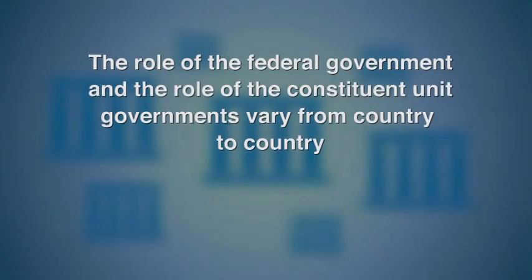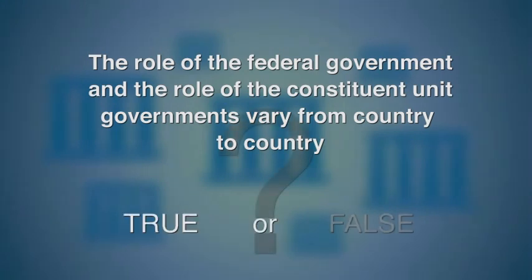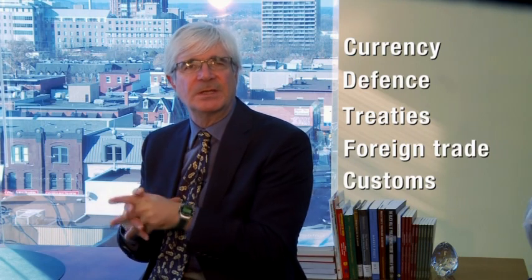That ends the section on how powers are divided in federal countries. Let's try a true-or-false exercise. Statement one: The roles of the federal government and of the constituent unit governments vary from country to country. That is true. The roles do vary from country to country; however, there are clear patterns. Federal or national governments usually have control over currency, defense, treaties, foreign trade, and customs.